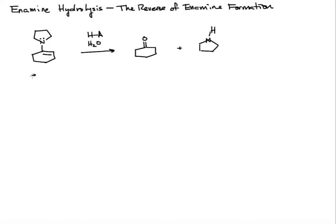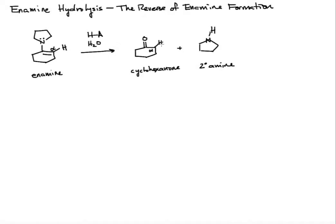We're given the starting material, the enamine, and reagents or conditions to form cyclohexanone and our secondary amine. Looking at what's changing from the starting material to the product, let's draw this hydrogen in. That's an alpha carbon, and in the product the alpha carbon now has two hydrogens. This carbon bearing the nitrogen in the product is now a carbonyl, so we have to add oxygen to that carbon through our mechanism.